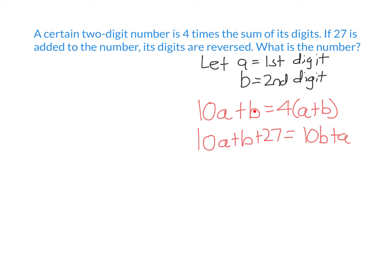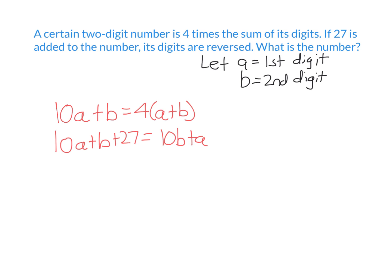I'm now going to solve these two equations simultaneously. Let's make the equations easier to work with. If I expand the brackets, I get 4A plus 4B. If I subtract them, I get 6A minus 3B equals zero. For the second equation, I want all the A's and B's on one side, so I get 9A minus 9B equals negative 27.